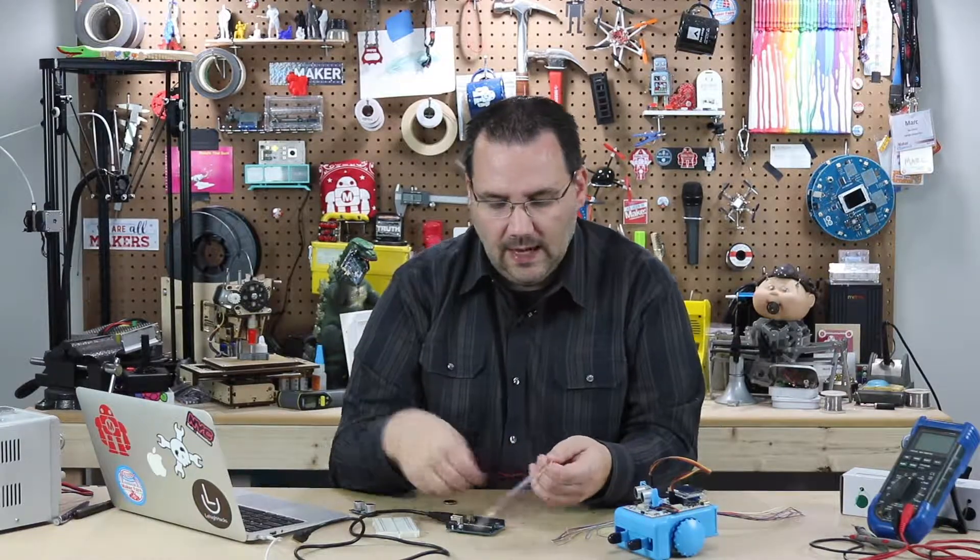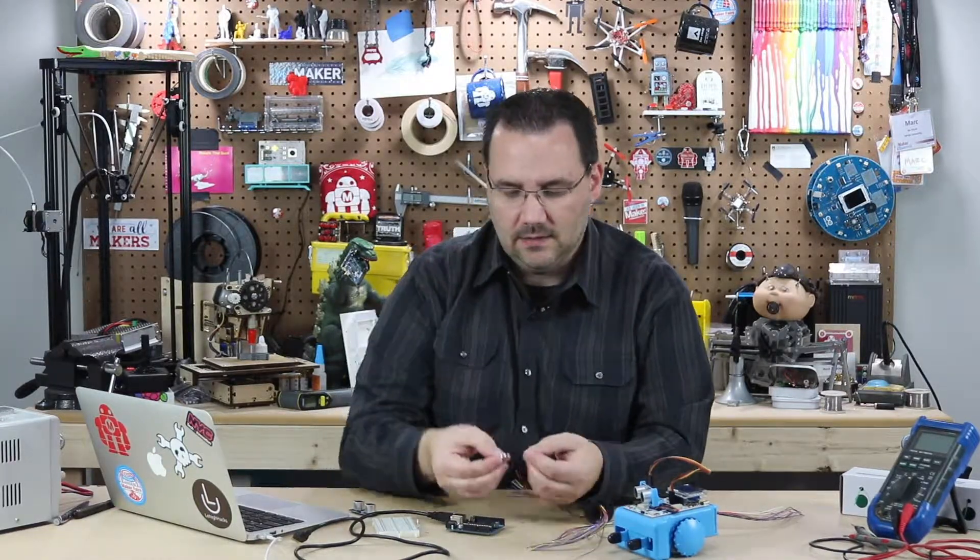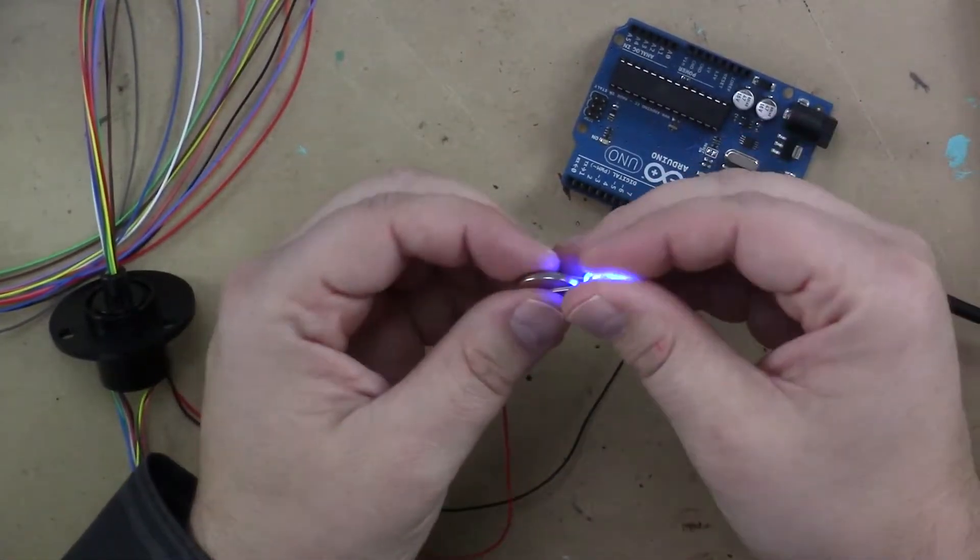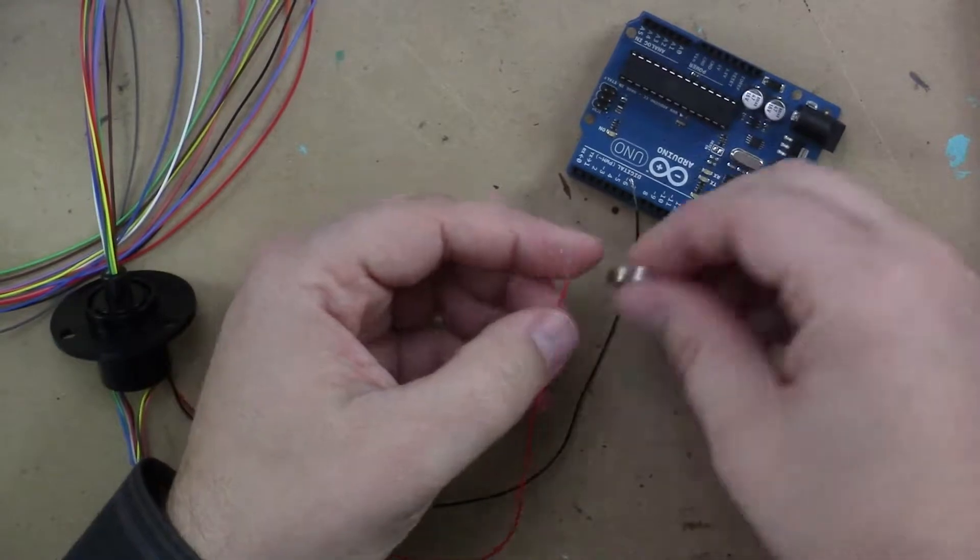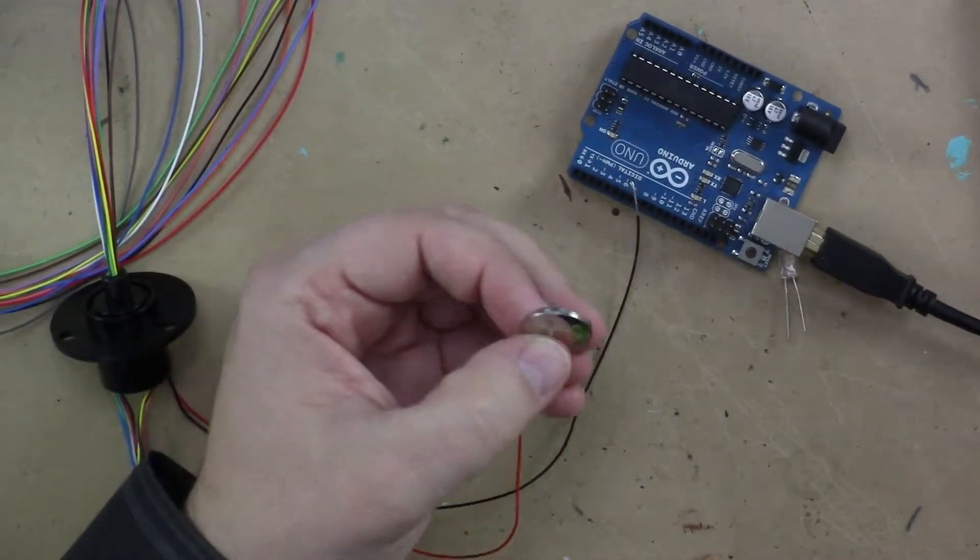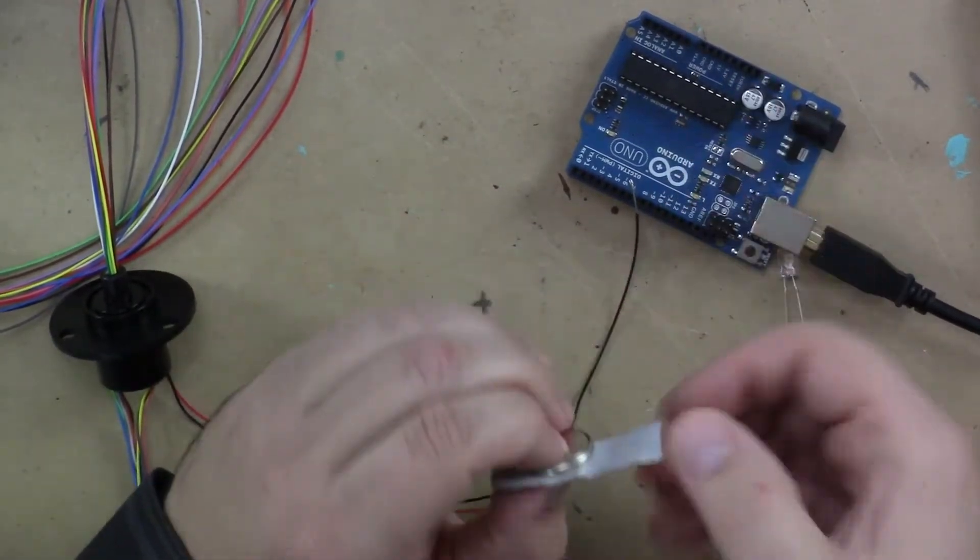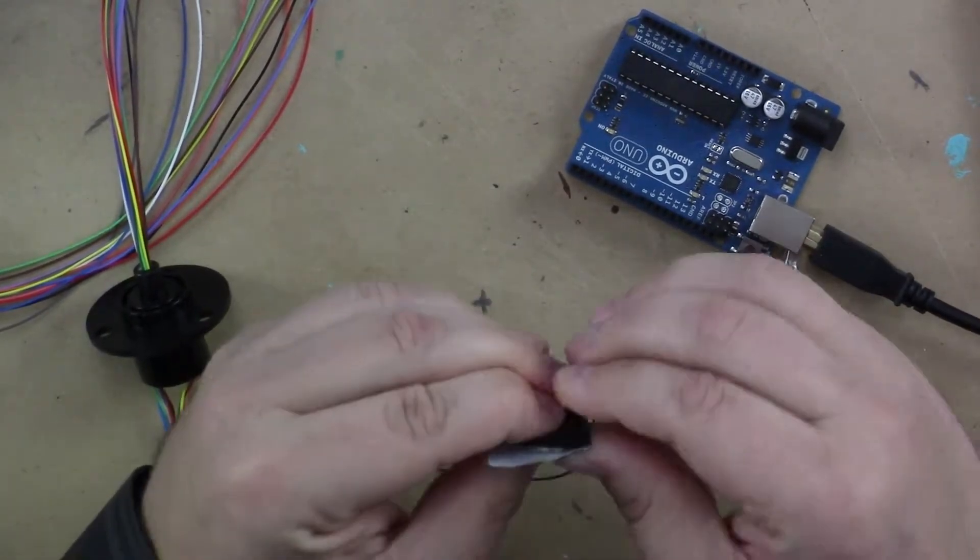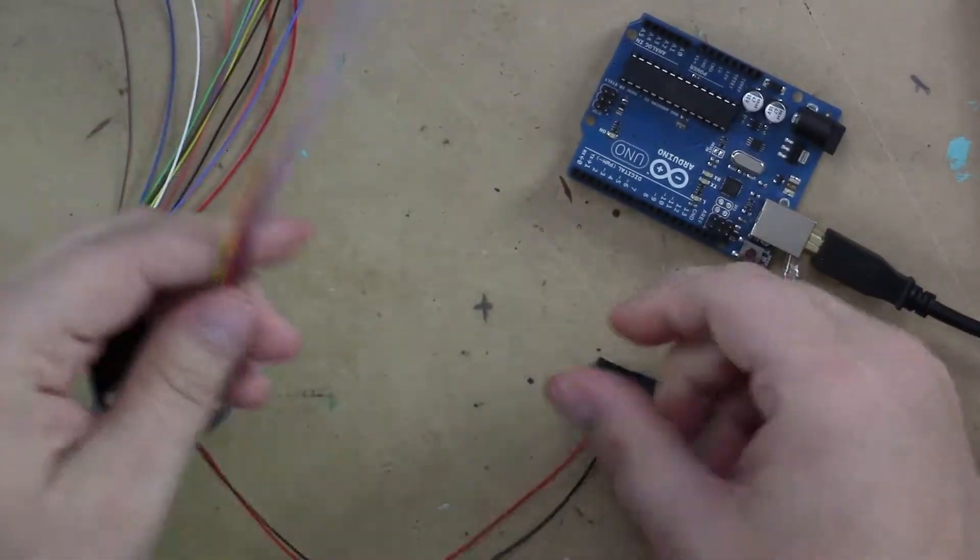I can demo really quickly how they work. If I were to take this coin cell battery and an LED, I have one right here, and I were to just temporarily tape the red to positive and the black to negative. I'm just doing this to make a quick temporary connection.